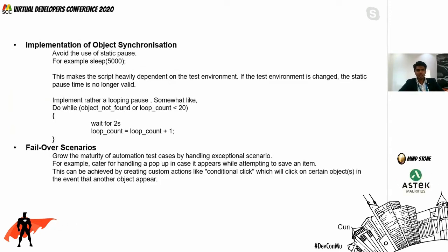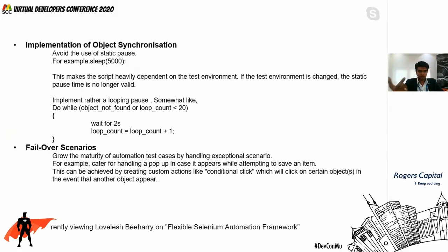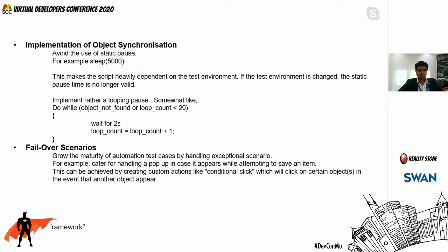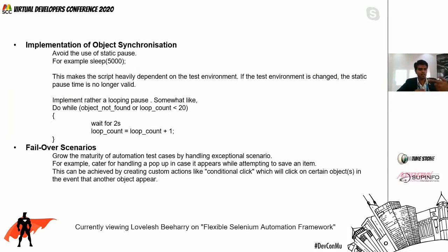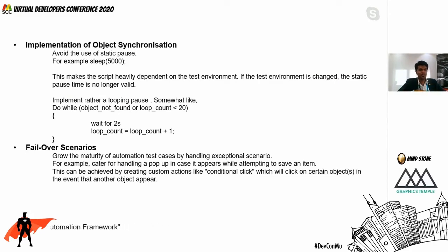Implementation of object synchronization is important. It is bad practice to use static sleep or static pause in automation, because when executing the same test on another environment, the static pause value may vary. To allow easy environment swapping, we implement a dynamic wait — wait for a small amount of time, check whether the object is present, and if not, wait a little more, looping until the object appears. This cuts down the dependency on the test environment.